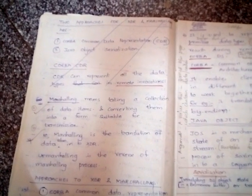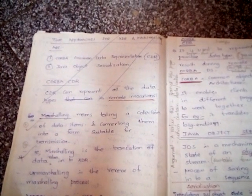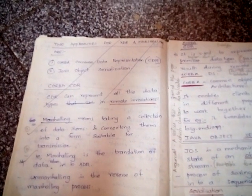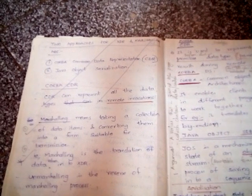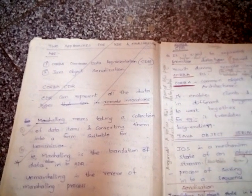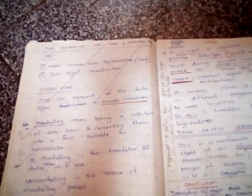Simply, marshaling is a collection of data items and converting them into a form suitable for transmission. Marshaling is a translation of data values into XDR, that is known as external data representation. Unmarshaling is the reverse of the marshaling process.